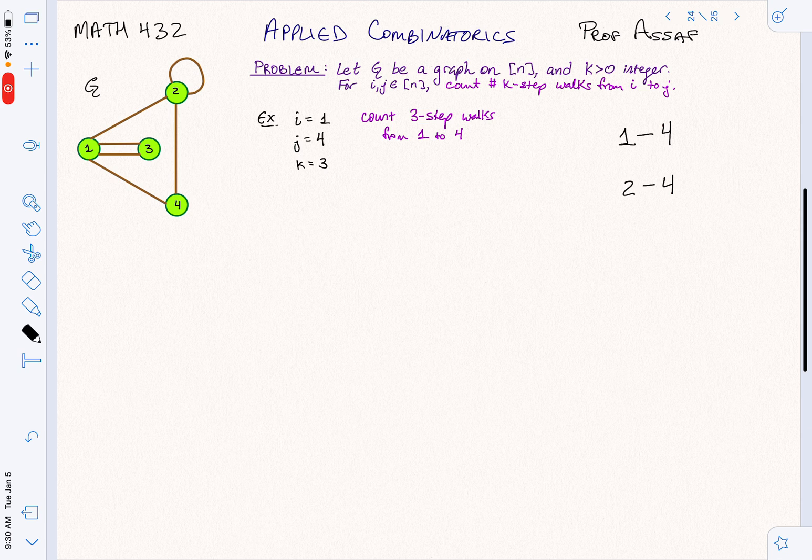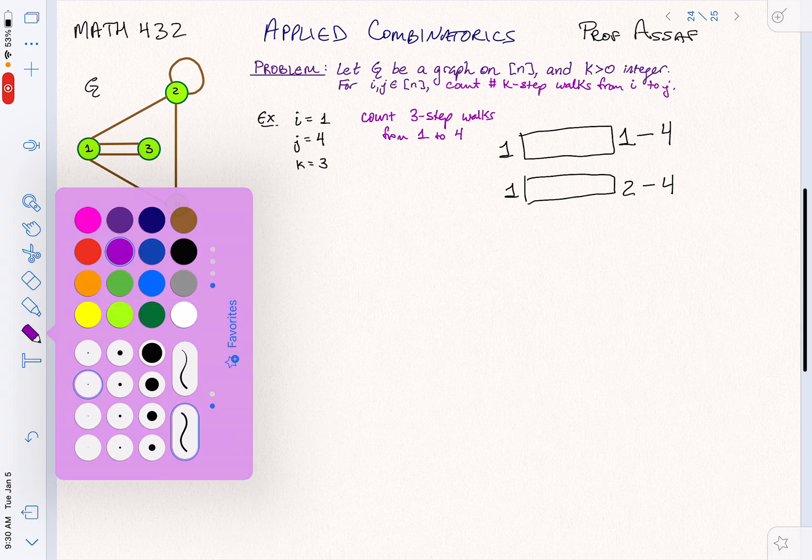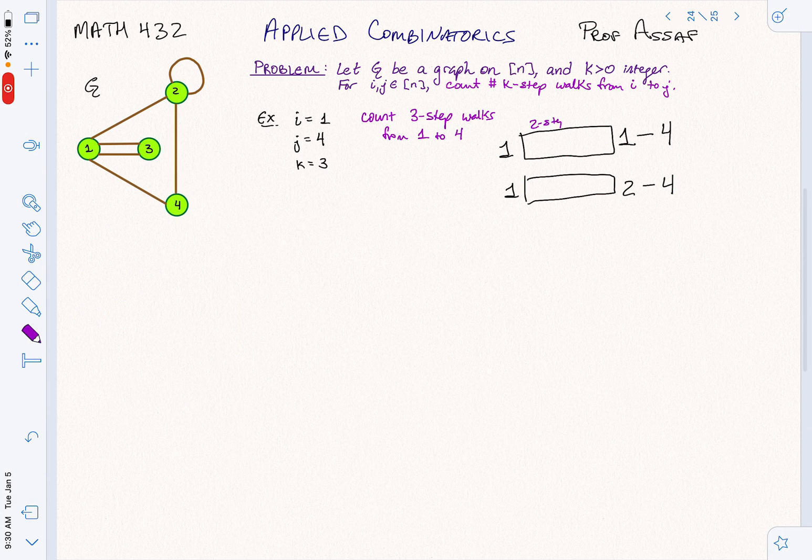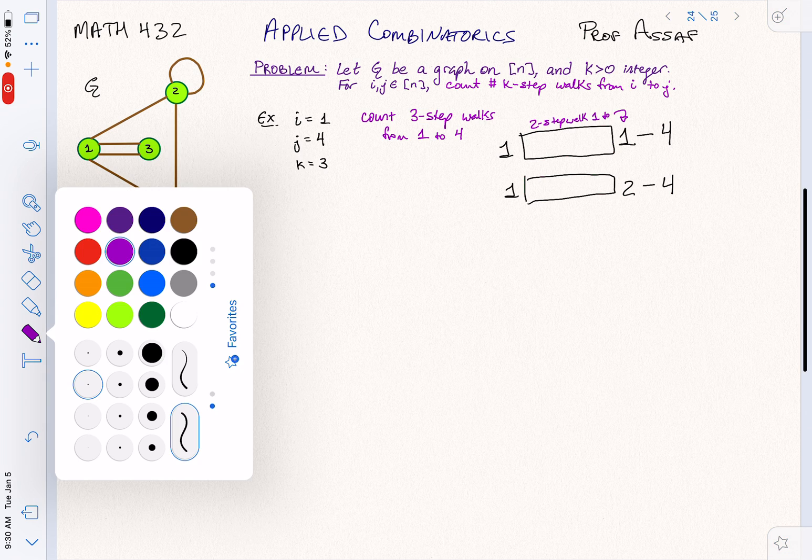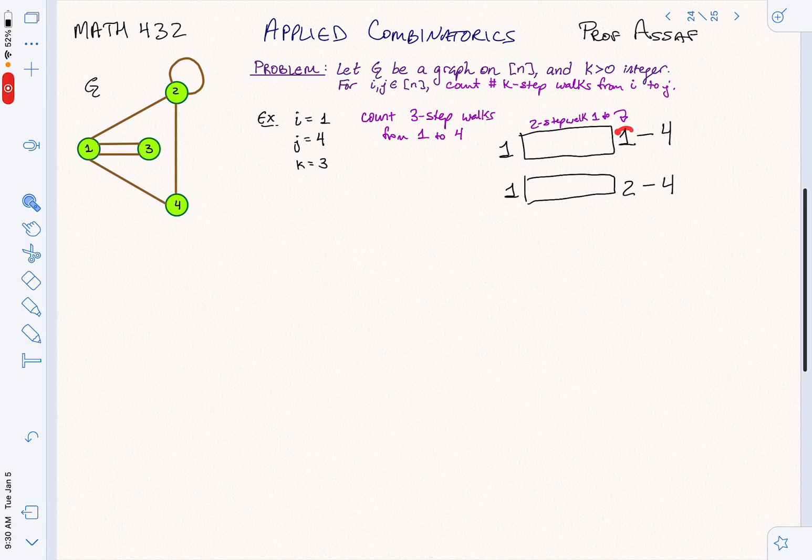So now what have we got left? Well, now what we have left is, remember, we're starting at 1. So what we have here is a two-step walk. This is a two-step walk from 1 to whatever is in this column. In this case, we've got 1 or 2.